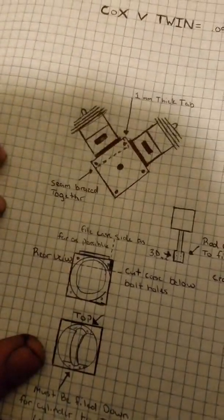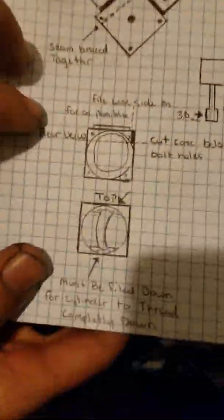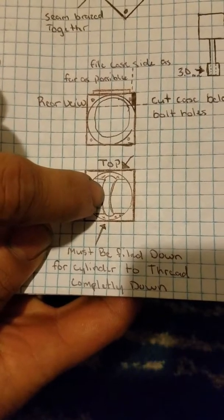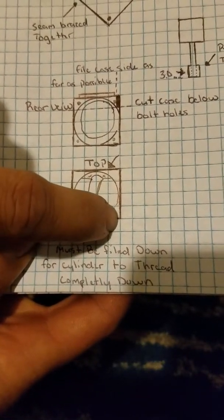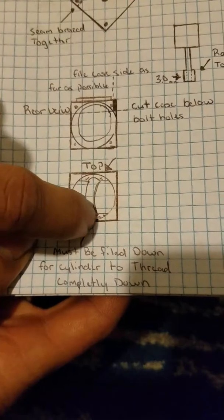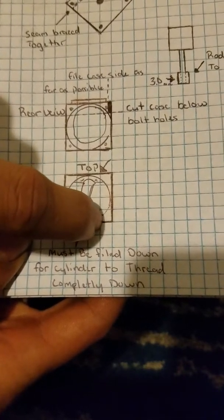And the second problem you're going to run into is, if looking from the top down, you're going to have this nub right here. This is going to have to get filed down so the head can screw all the way in.